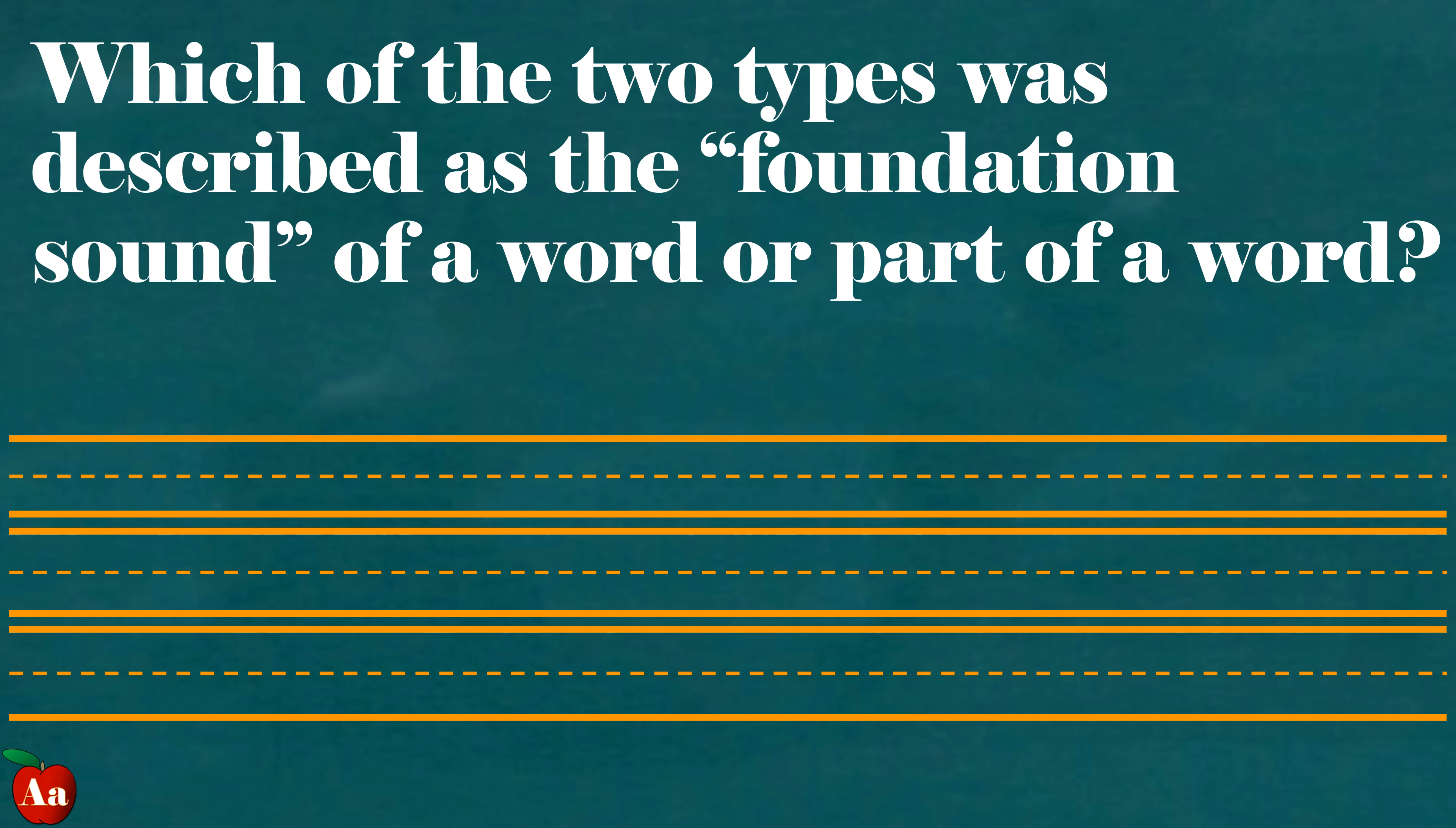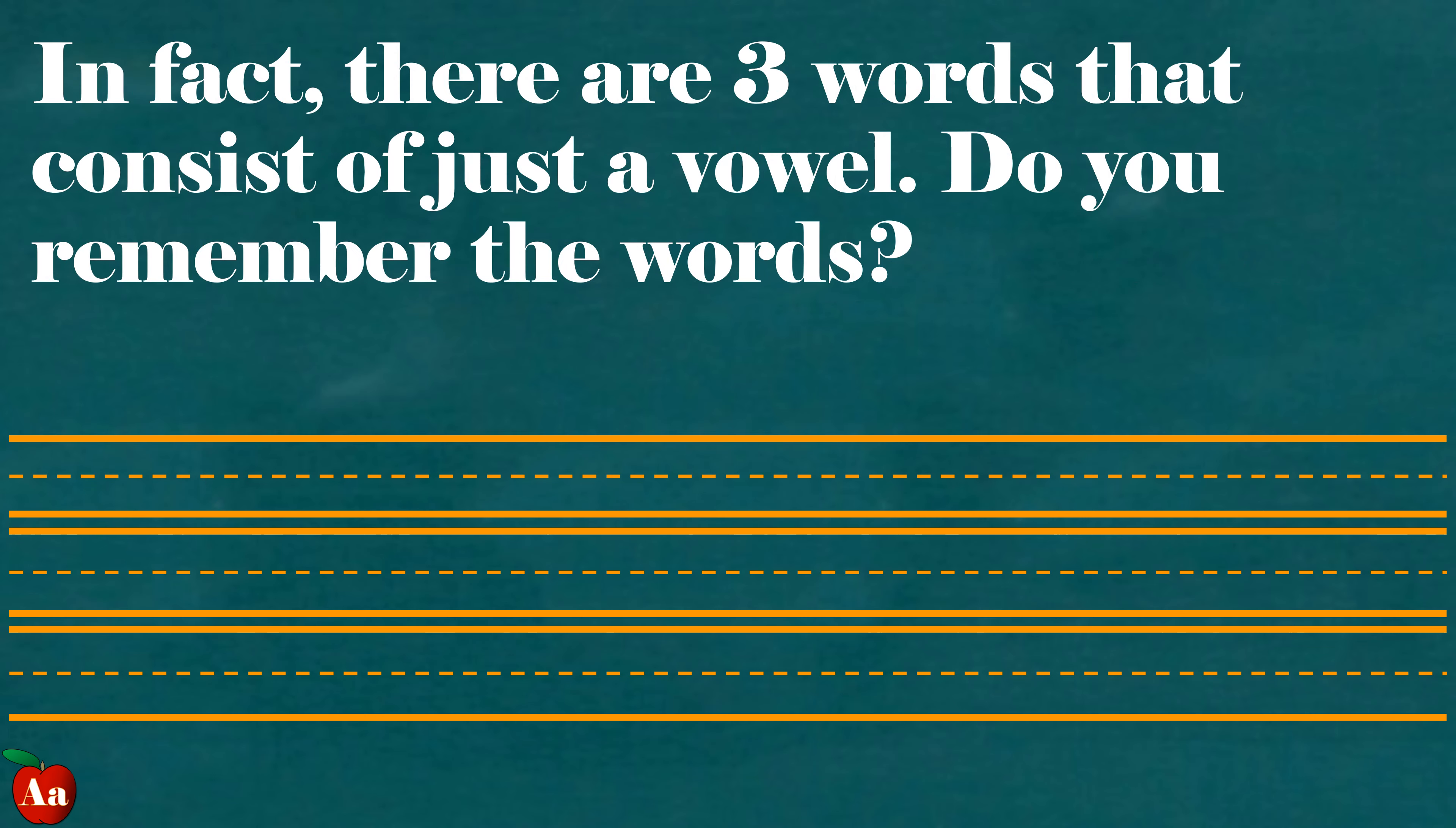Which of the two types was described as the foundation sound of a word or part of a word? Vowels. In fact, there are three words that consist of just a vowel. Do you remember the words? O, I, and U.